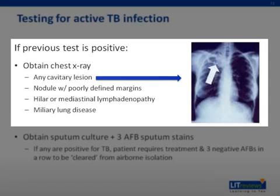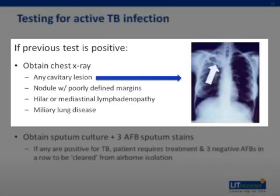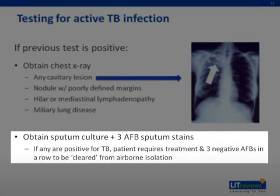If testing a patient for active TB, you'll first obtain a chest X-ray. Any cavitary lesion, a nodule with a poorly defined margin, hilar or mediastinal lymphadenopathy, or miliary lung disease — where it looks like many seeds are strewn throughout the lungs — would be indication of active TB. You would also want to obtain three sets of sputum cultures, which you would test for acid-fast bacilli. If any of these return positive, the patient would be treated for six months for active TB, and then you'd repeat all three sputum cultures. The patient would only be cleared of the infection when three in a row come back negative.